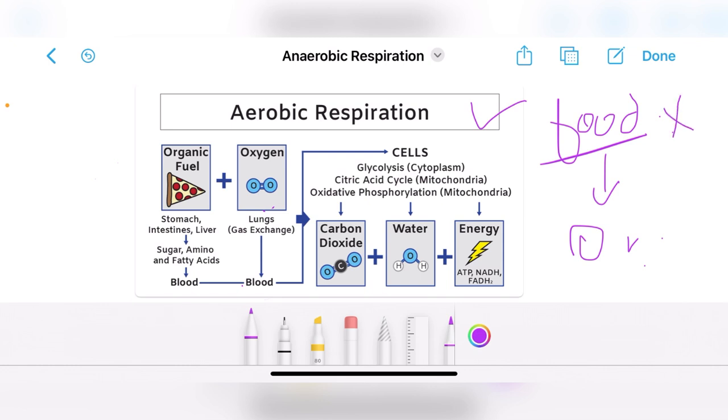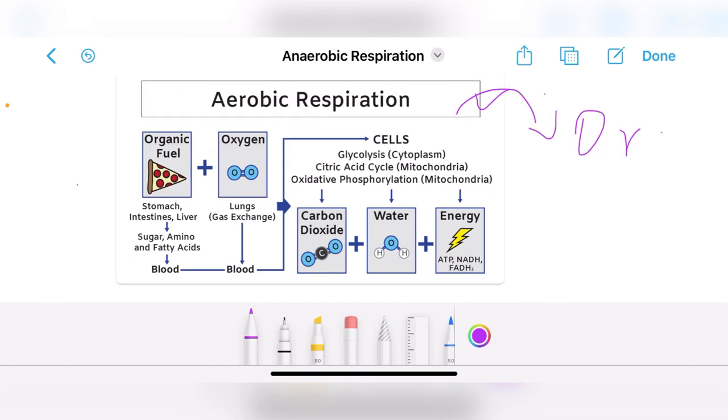Hence it is called aerobic cellular respiration. Similarly in this diagram you can see food, chahe glucose ki form mein ho, proteins ki form mein ho, ya fats ki form mein ho. When we intake food, it reaches to the stomach and then to the intestine and then liver, and ultimately this food then enters the blood.